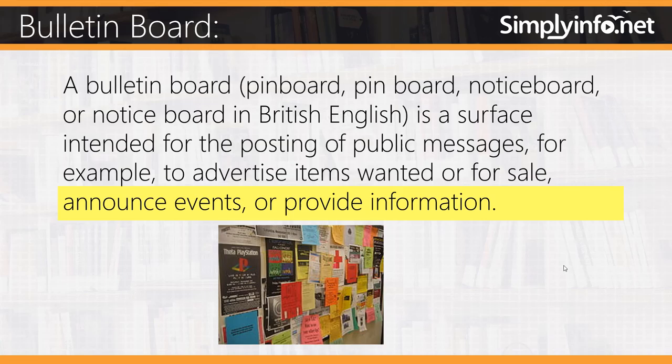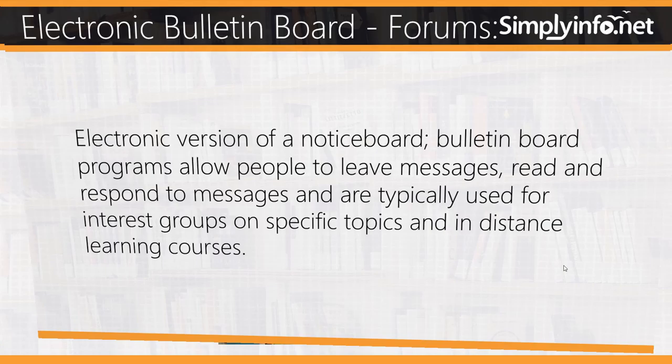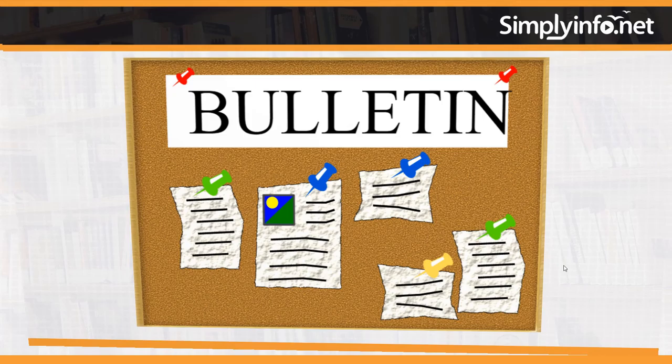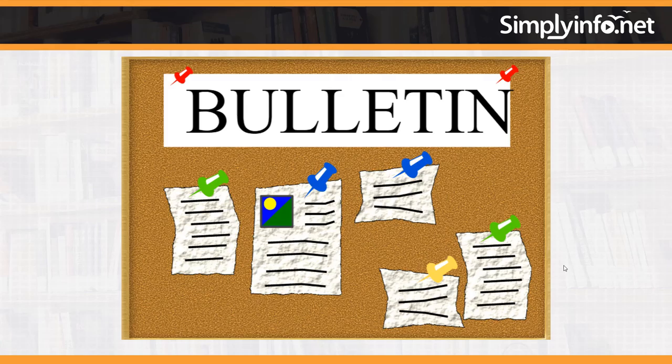We can see a sample in the image. An Electronic Bulletin Board, also called a Forum, is an electronic version of a Notice Board. Bulletin Board programs allow people to leave messages, read and respond to messages, and are typically used for interest groups on a specific topic and in distance learning courses. You can see a sample image of a Bulletin Board — it is made up of cork so that people can paste on it easily.